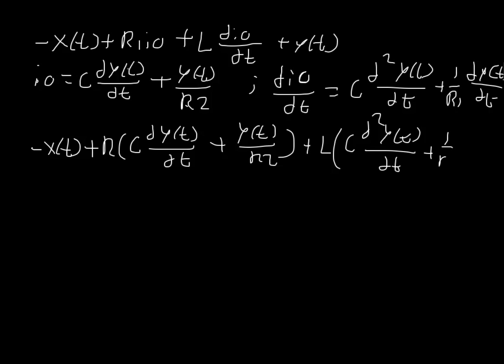Plus l times cd squared yt dt plus 1 over r1 dy of t dt. Now there's a closed bracket there, but I can't quite draw it. And then all that is added with y of t.